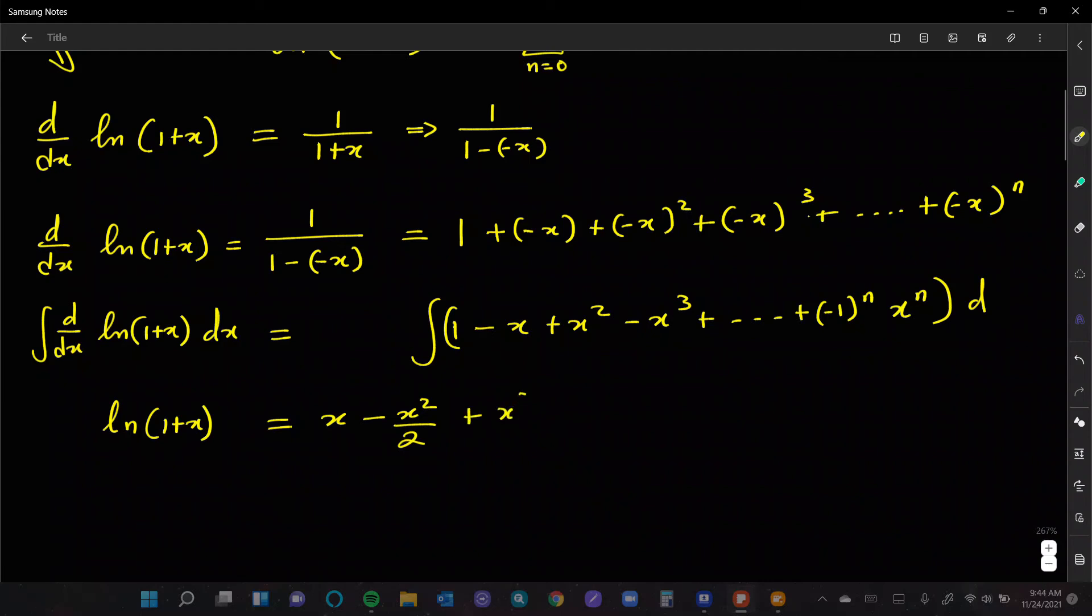And it's going to be minus x squared over 2, the next term is going to be plus x cubed over 3, minus this is going to be x to the 4th over 4. And plus, we'll keep this negative 1 to the n, and we're going to take the integral of x to the n. That's going to be x to the n plus 1 over n plus 1.